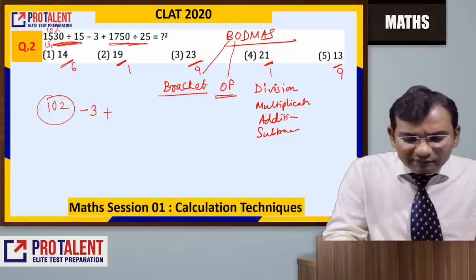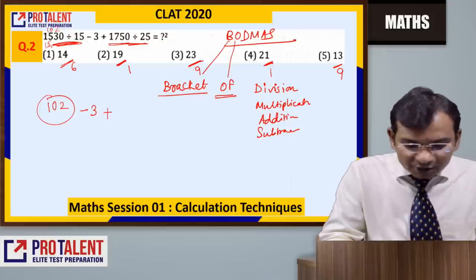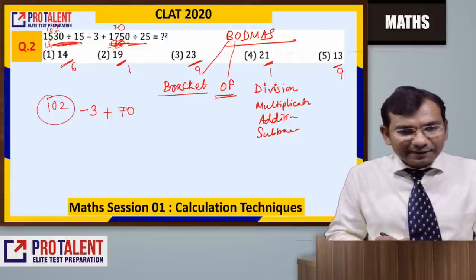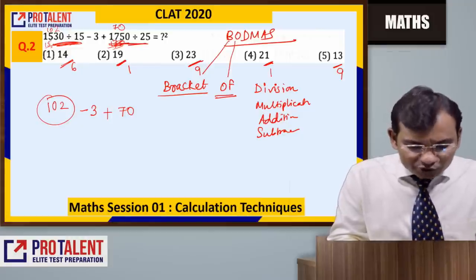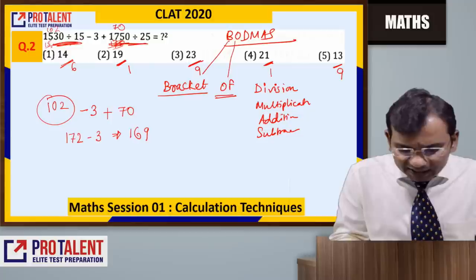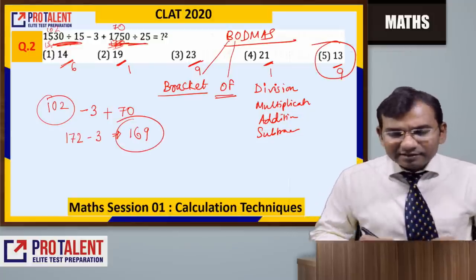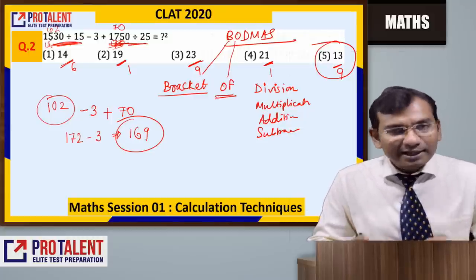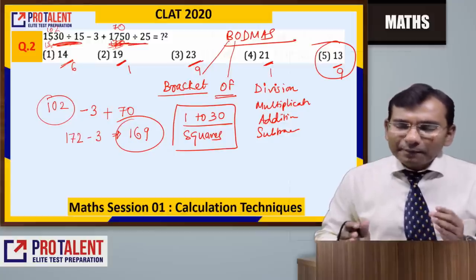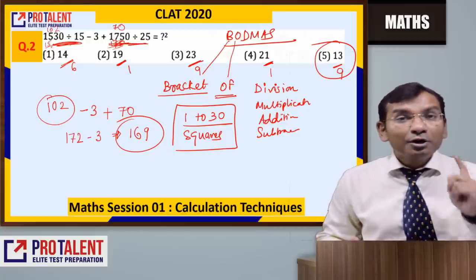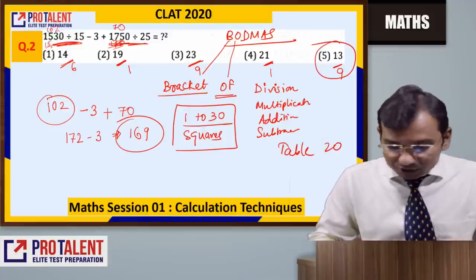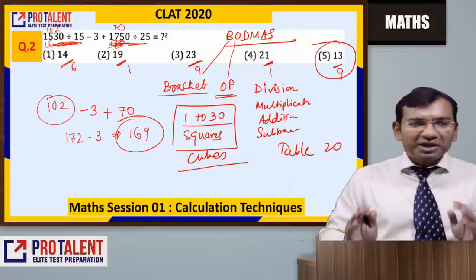Next: 1750 divided by 25. 25 sevens are 175, so this gives 70. So we have 102 plus 70 minus 3, which is 169. 169 is 13 squared. Please memorize squares from 1 to 30, cubes up to 30, and tables up to 20 — this is very important for the exam.